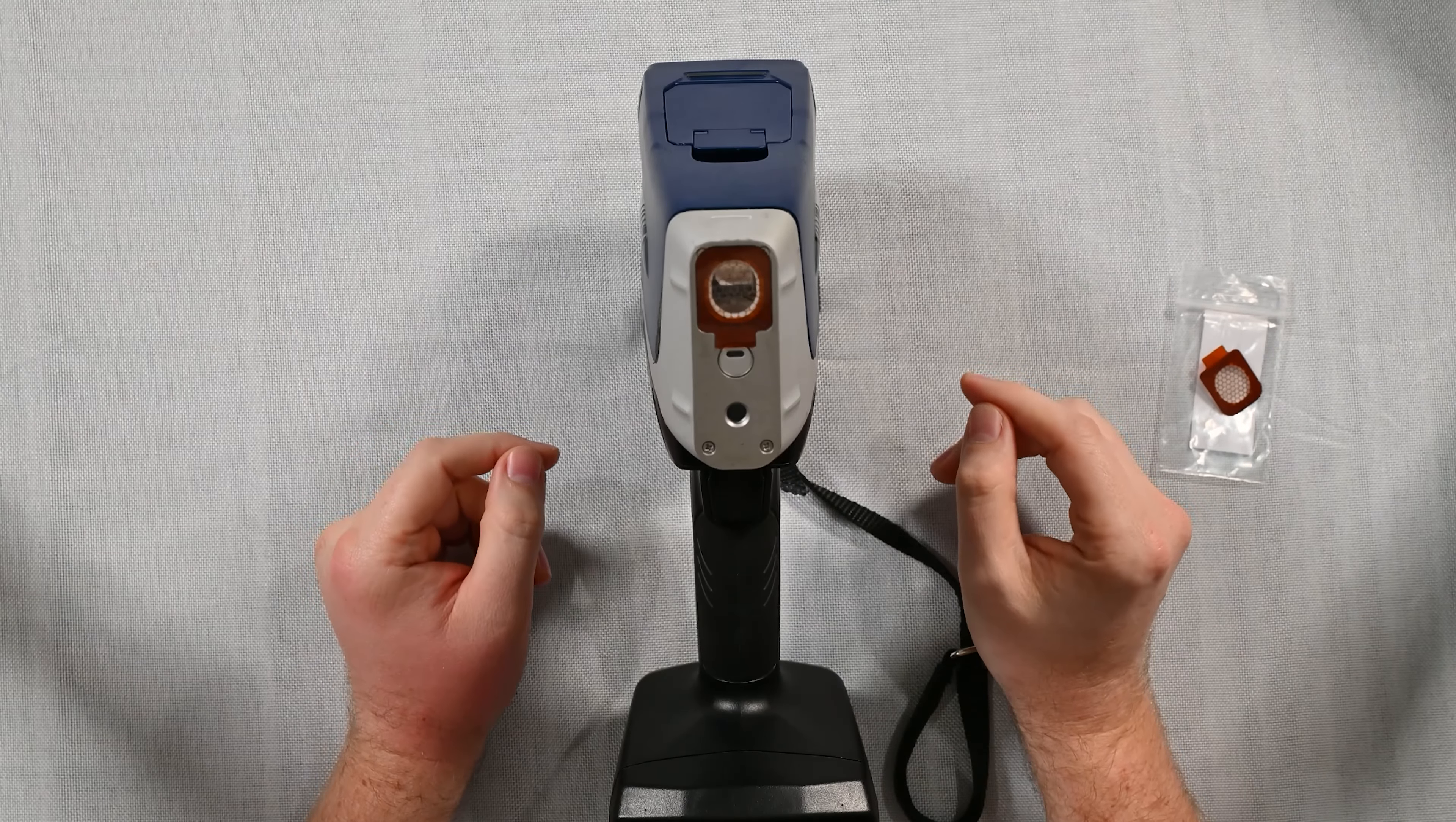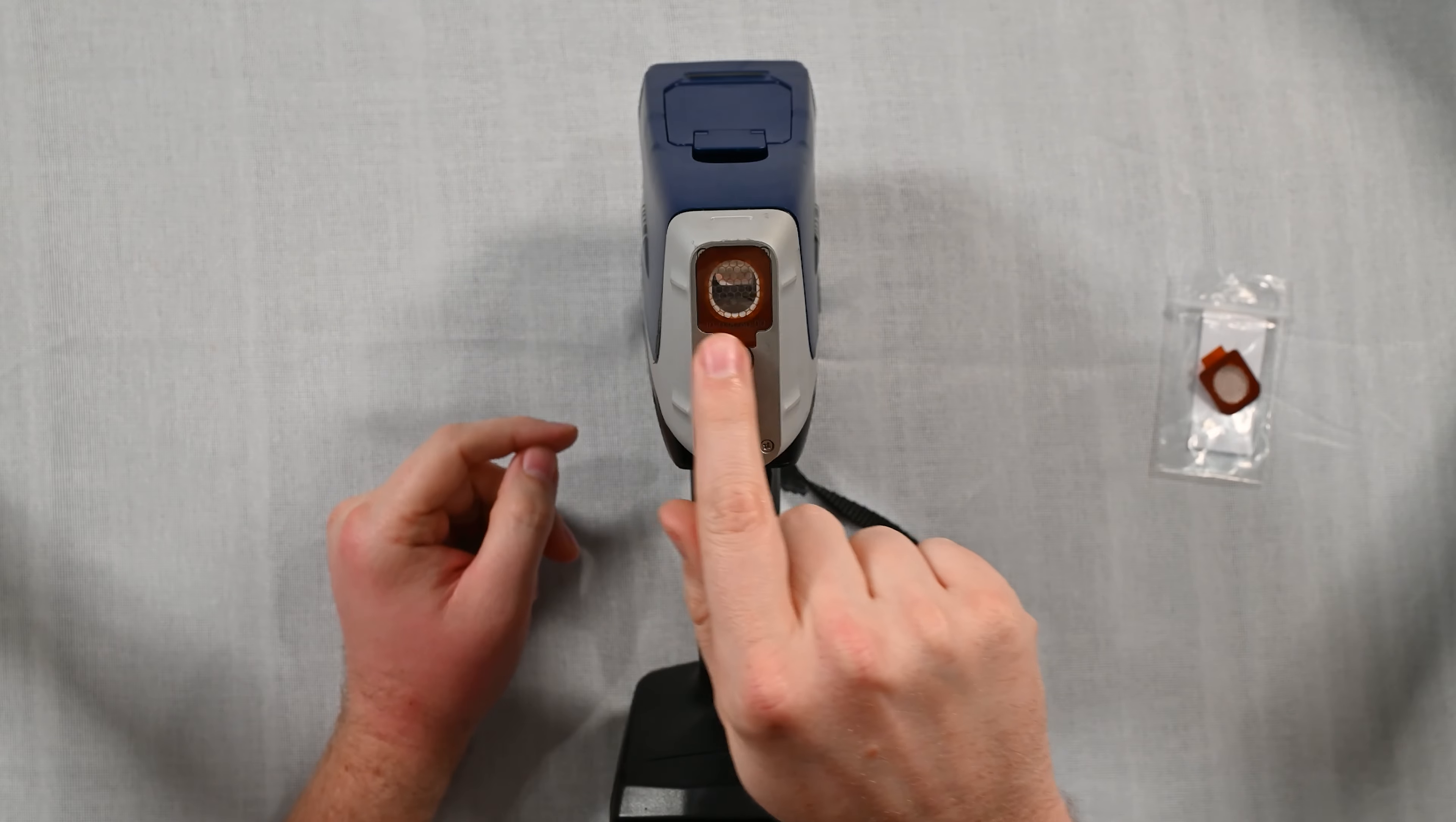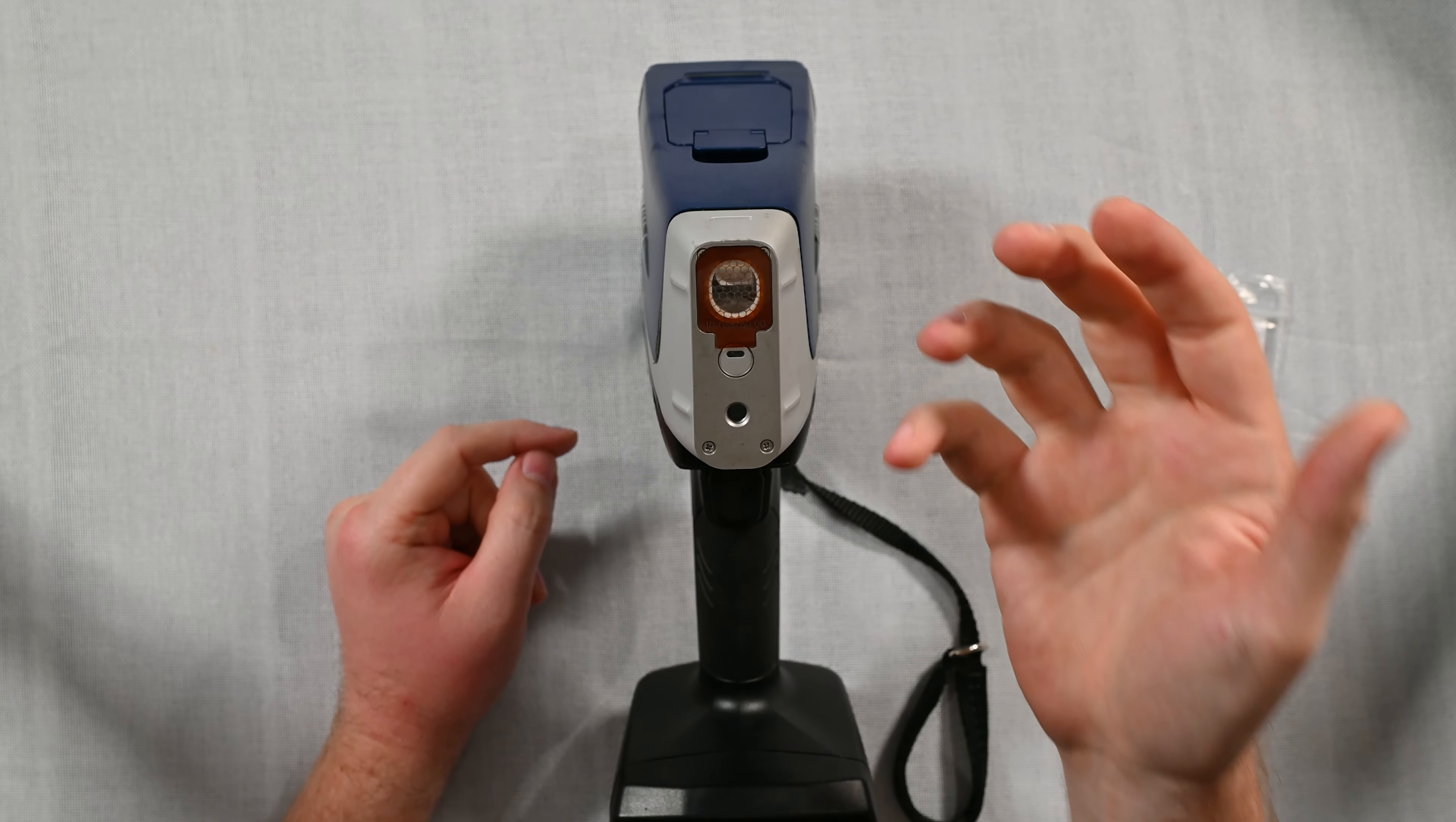This is a brand new handheld XRF by Olympus who are now Evidence Scientific. So the window that we're referring to is the XRF or measurement window right in the front here. This is going to protect the analyzer from dust and debris.